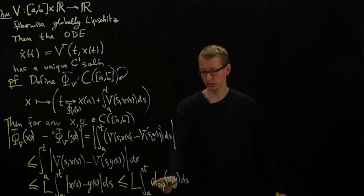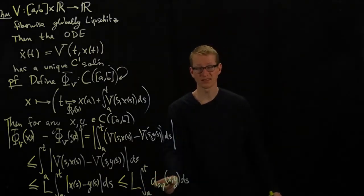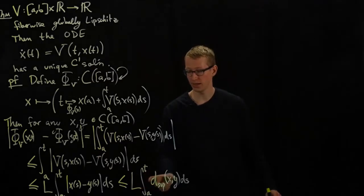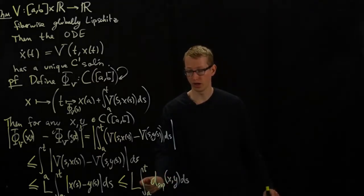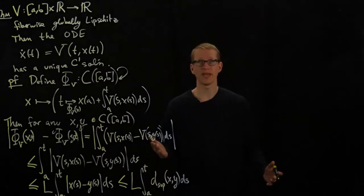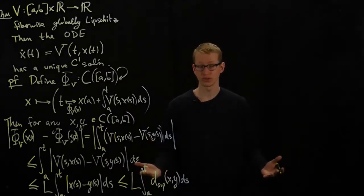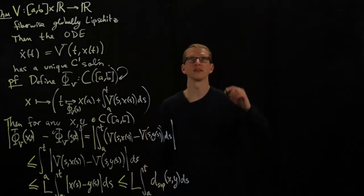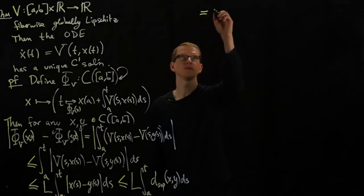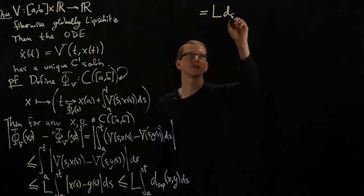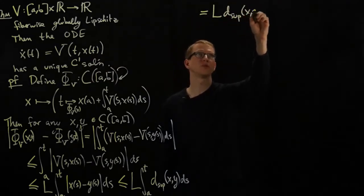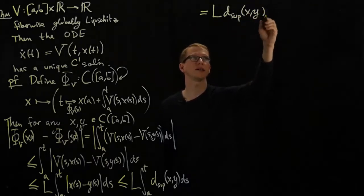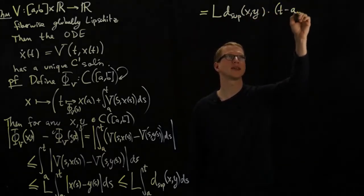And if you notice now, this expression doesn't depend on s. Therefore, we have L times this distance, times the integral of the function 1, from A to T. And that integral is simple, it's just T minus A. So this is equal to L times the distance, with respect to the sup norm, between the two functions x and y, times T minus A.